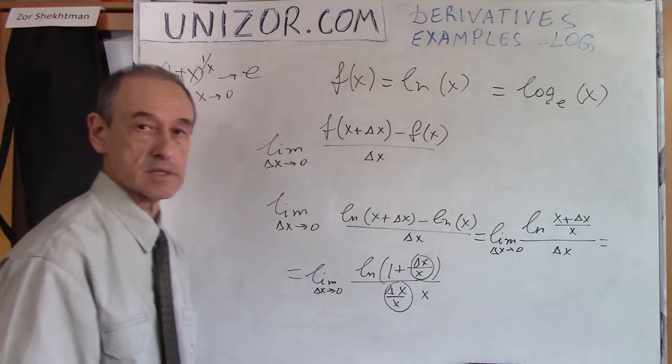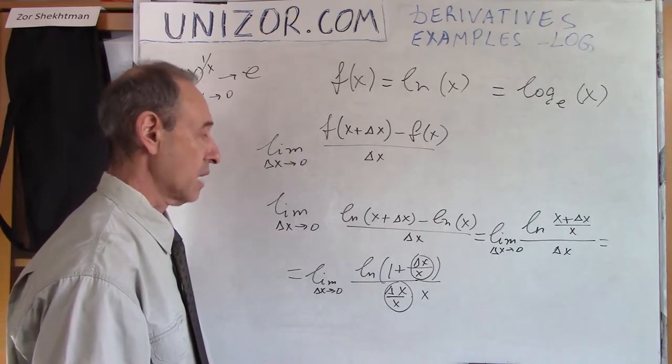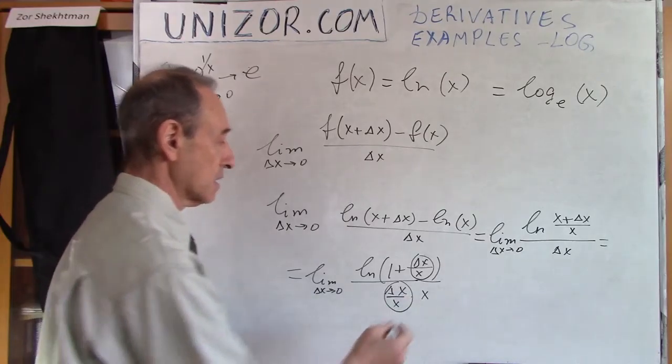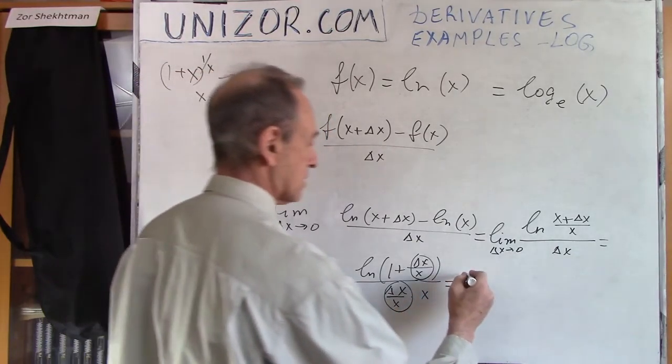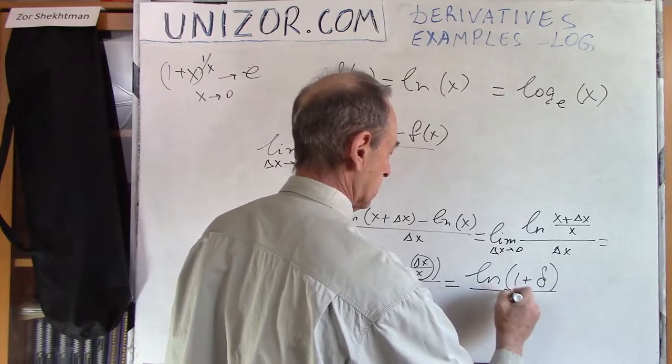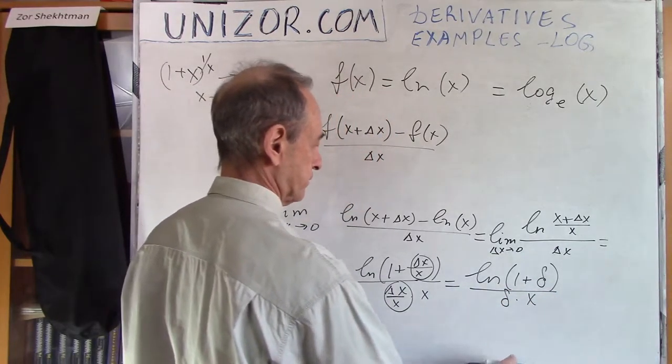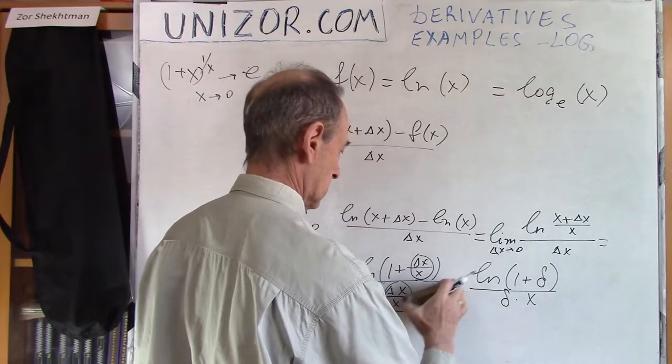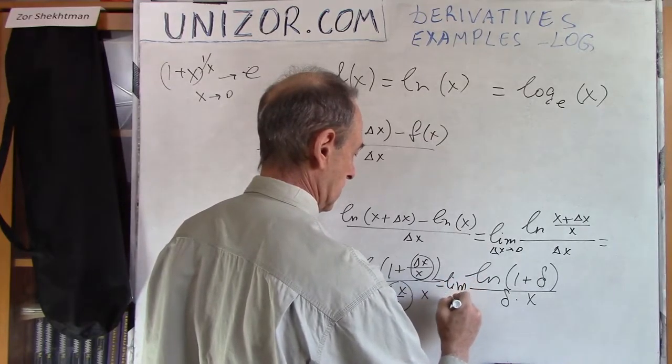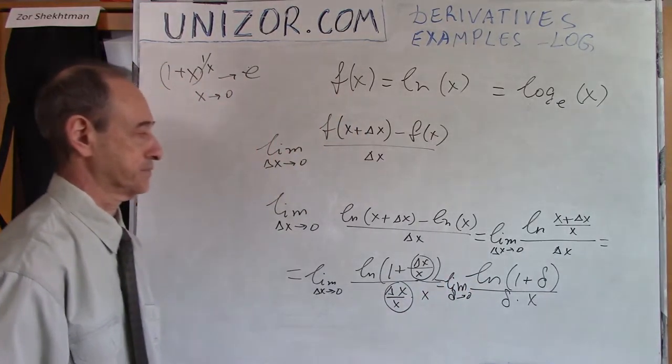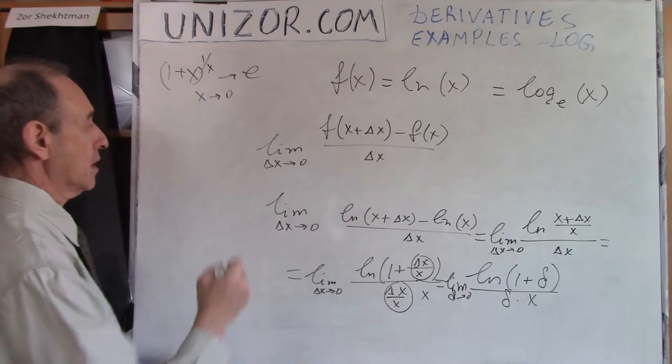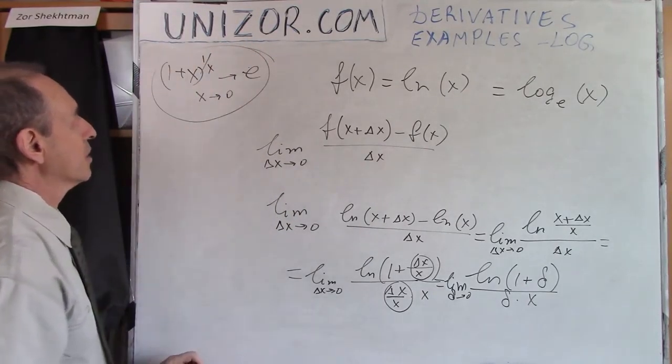x, as I was saying before, is a fixed number within the domain of the logarithm and delta x is infinitesimal. So basically delta x divided by x is just an infinitesimal and it goes to zero as well. So it's logarithm of 1 plus delta divided by delta times x, where I have to put the limit here. Delta goes to zero. Now let's go back to our amazing limit.